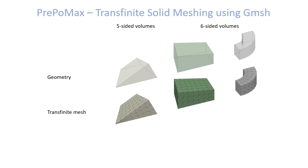If we apply a transfinite meshing constraint to such volumes and mesh them with the Gmesh mesher, we get tetrahedral meshes. But the surfaces of these volumes are meshed in a transfinite way and their distribution is regular.